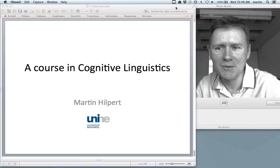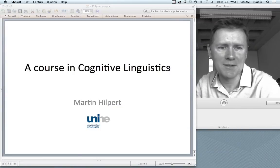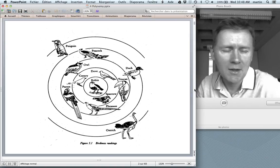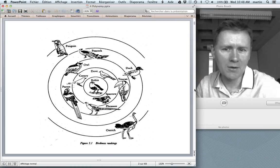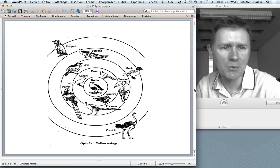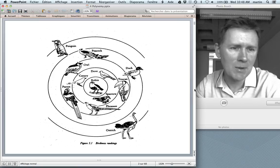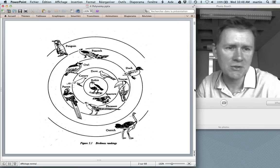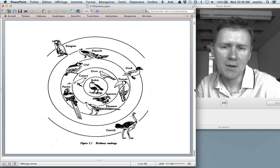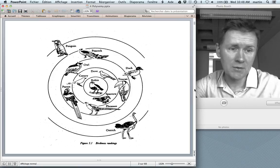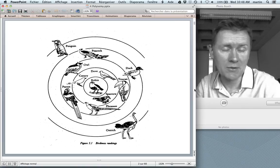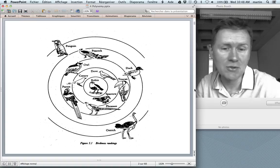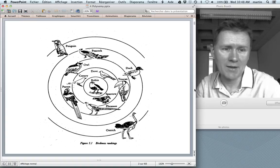Hello there and welcome back to a course in Cognitive Linguistics. In the last episode I was talking about categorization and the idea that categories are organized around so-called prototypes. There's central members of the category that unify all of the typical features of that category. And as you move towards the periphery of the category you find more marginal members that do not share all of the features that you usually expect of that category.